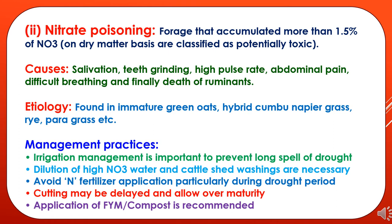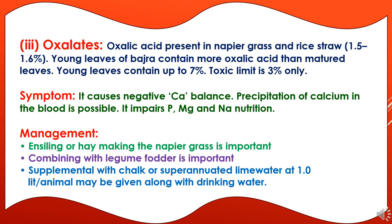Management practices to reduce nitrate poisoning include: irrigation management to prevent long spells of drought, dilution of high-nitrate water, and cattle feed washing. Avoid nitrogen fertilizer application particularly during drought periods. Cutting may be delayed to allow over-maturity, and application of farmyard manure or compost is recommended. The third toxic constraint is oxalates. Oxalic acid is present in Napier grass and rice, ranging from 1.5 to 1.6%. Young leaves of bajra contain more oxalic acid than matured leaves.